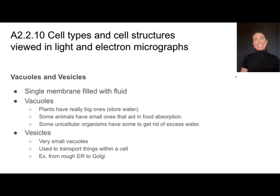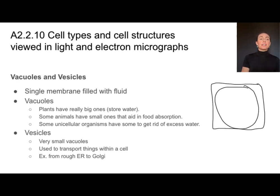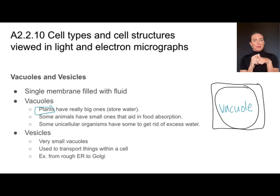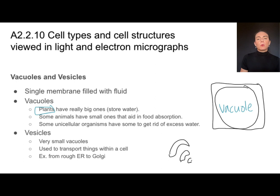Vacuoles and vesicles both start with the same letter. Vacuoles are typically associated with plant cells, and in plant cells the vacuole takes up almost the entire cell — that's a dead giveaway. In animal cells they are very small. Organisms like the paramecium and chlamydomonas also have contractile vacuoles to help get rid of excess water. Vesicles are just small vacuoles used for transporting things within a cell. I'll often find them next to the Golgi — tiny little sacks that can be seen when drawing the Golgi.